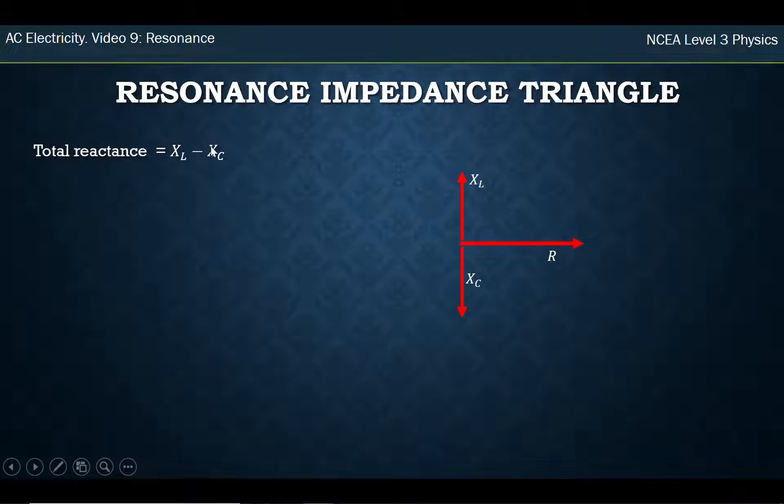So I can find, first of all, the total reactance. Remember, that's just looking at the reactances, which is the ones with the X. So that's the reactance of the inductor and the reactance of the capacitor. If I find the difference of those, they're equal and opposite. It's zero. They cancel out completely.